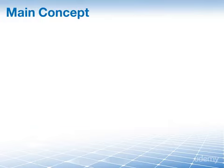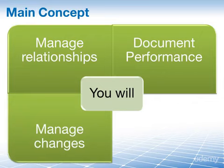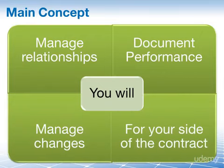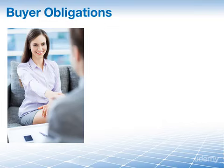The main concept you have to understand in the control procurements process is that a lot happens here in regards to procurement management — similar to project integration management for the overall project. In this process, you will manage relationships, document performance, and manage changes for your side of the procurement contract. The idea is that both the seller and the buyer perform according to the agreed contract, meaning both parties are running their own processes of control procurements from their respective points of view.